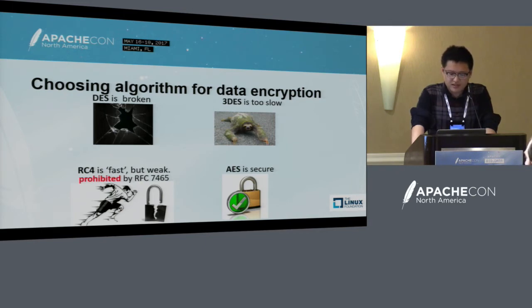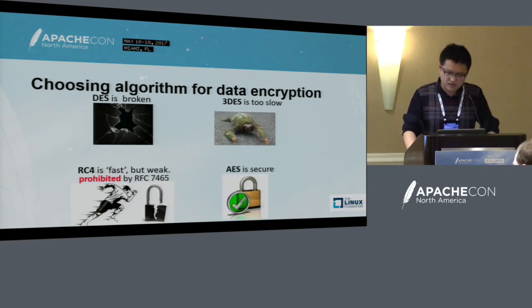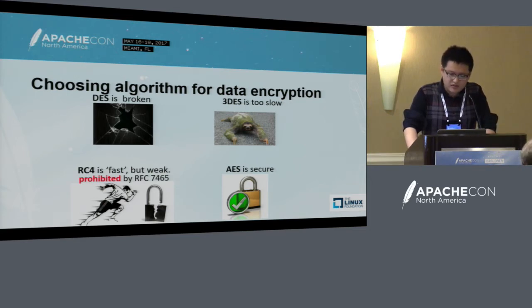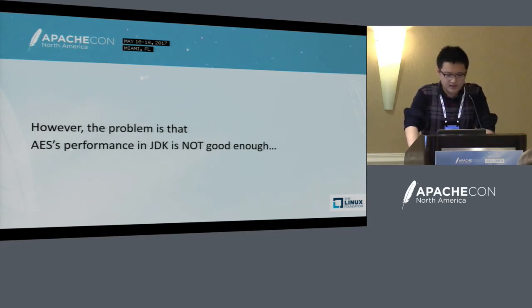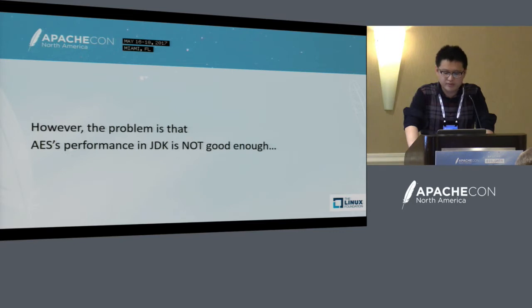Which algorithm should we choose? DES is insecure and broken. Triple DES is too slow. RC4 is well known for its speed; however, recently it is considered to be insecure — it was prohibited by RFC, and both Microsoft and Mozilla recommend developers disable RC4. So when it comes to security, the winner is undoubtedly AES. AES is secure and is considered the industry standard. However, the performance of AES in JCE is not good enough for big data users.